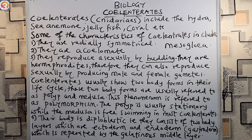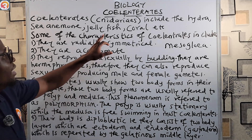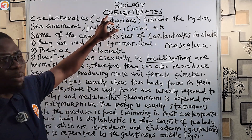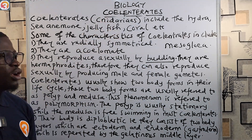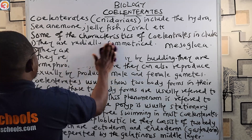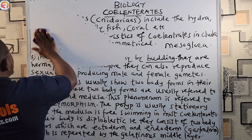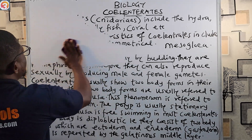It is very important to note that the phylum Coelenterata is made up of four classes. Let us now look at those four classes.